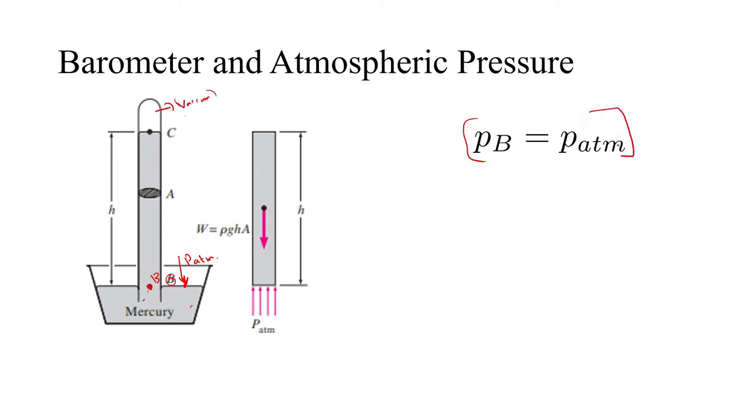We are making use of this principle. But what is the pressure at B? This pressure is due to the hydrostatic pressure of this liquid column. And here it is vacuum. Since it is vacuum, there is no pressure here.